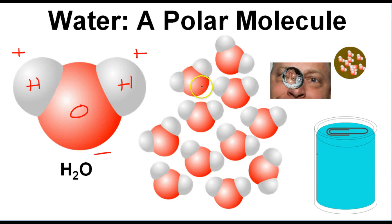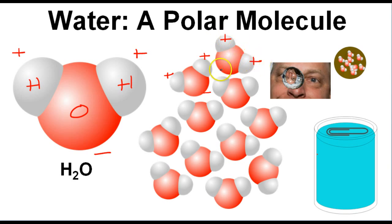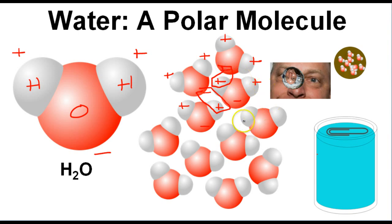So water is polar in nature, but what does that mean? Let's suppose we have a container of water — it can be a lake, a glass, a beaker, a graduated cylinder. If we have a bunch of water molecules, we've got a bunch of positives and a bunch of negatives. We know that opposites attract, so there is a force of attraction that exists between the different water molecules.